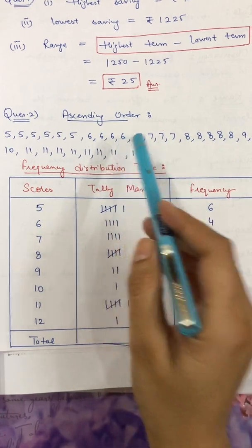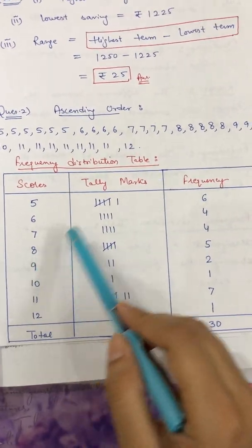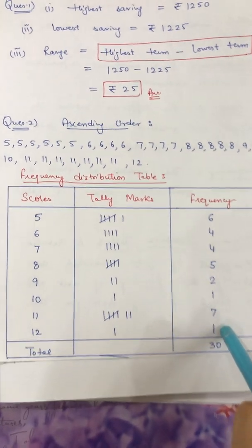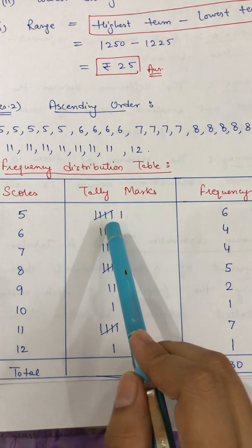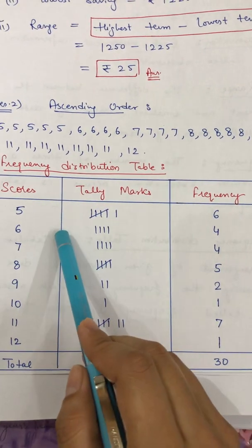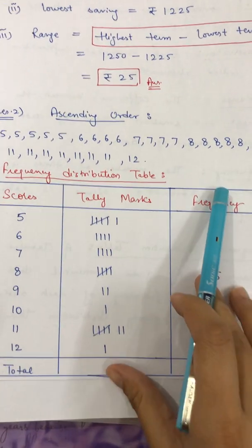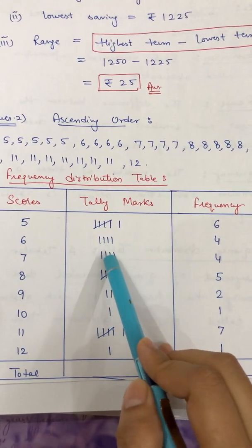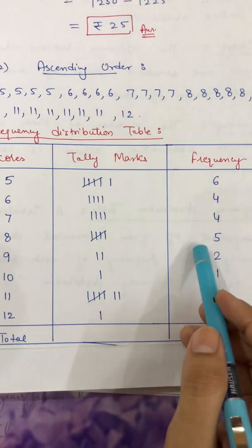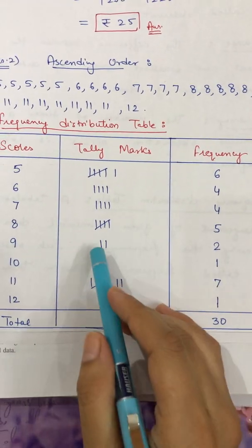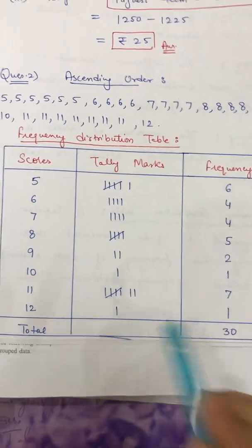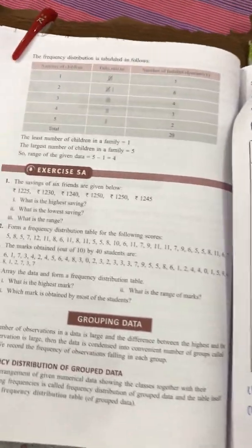Six is occurring four times, seven four times, eight five times, nine two times, ten one time, eleven seven times, twelve one time. For tally marks: six means four straight lines and then the fifth cuts through them, then start a new group. Four means four straight lines, two means two, one means one, seven means one group of five plus two more, and so on. This completes your frequency distribution table.